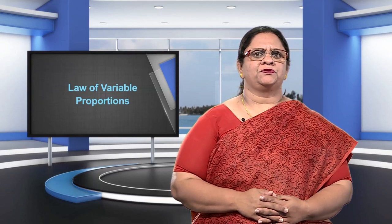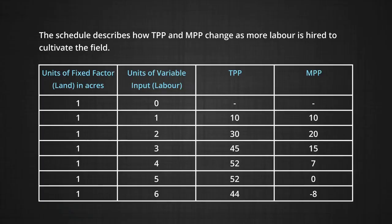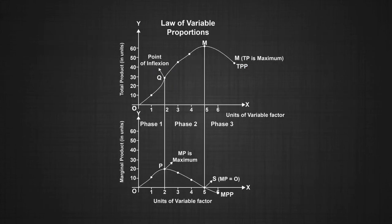Let us discuss the law of variable proportions with the help of the following schedule and diagram. Consider a field which is being cultivated for growing wheat. The field has an area of one acre. The schedule on your screen describes how the TPP and MPP change as more and more labor is hired to cultivate the field. This data can be represented in the diagrammatic form as shown in Figure 1. On the basis of changes in TPP and MPP, the law of variable proportions classifies the TPP into three stages. We can use Figure 1 to understand these phases.